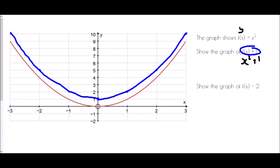So what would happen if we were looking at f of x take away 2? Let's have a look at that one in green. The same thing again — let's start with some key points. If we use x is 0, this is actually saying x squared take away 2. So 0 squared is 0, take away 2, it will be negative 2. If x was 1, well 1 squared is 1, take away 2, that is negative 1. If x is 2, 2 squared is 4, take away 2 is 2.